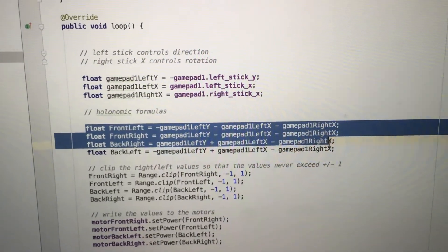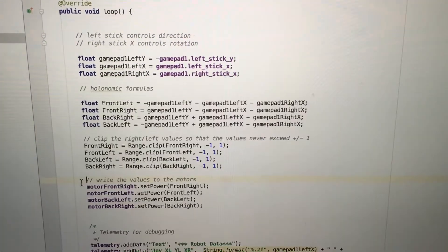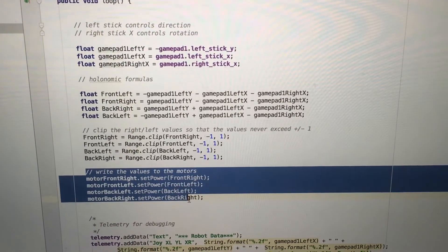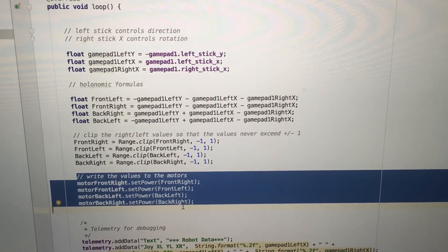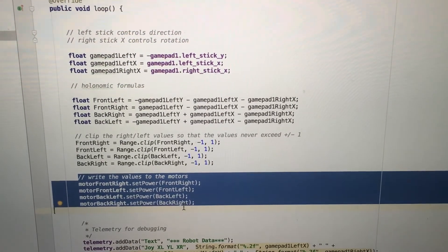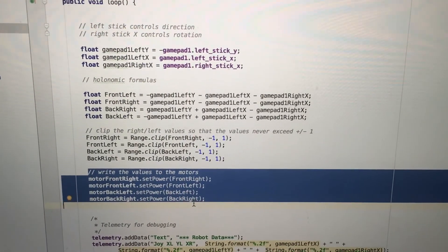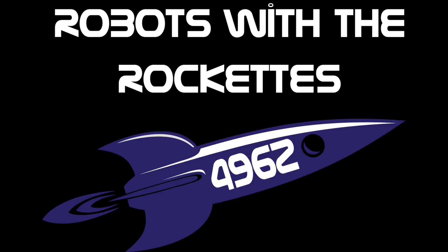Here, we take the data from the joysticks, and here is where we set the power to each motor. All of our code will be on GitHub if you guys want to try this for yourselves. That's all. Bye, Bot Buddies!